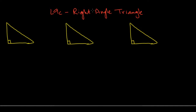Next, we'll look at a special type of triangles called right-angle triangles, which are actually the favorite type of GRE triangles. So this is the second part of our ninth lesson. A right-angle triangle is a triangle where one of the angles is 90 degrees, which is represented by this small square.